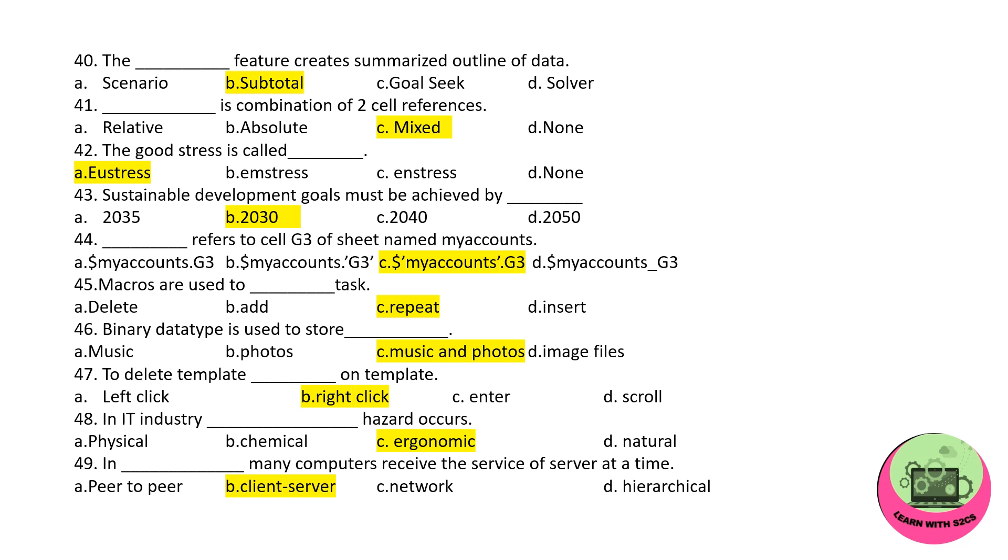Moving to the next set. The dash feature creates summarized outline of data: subtotal. Dash is a combination of two cell references, so it will be mixed. The good stress is called eustress. Sustainable Development Goals must be achieved by 2030, and how many Sustainable Development Goals are there total? There are 17, which is adopted by UN, that is United Nations.